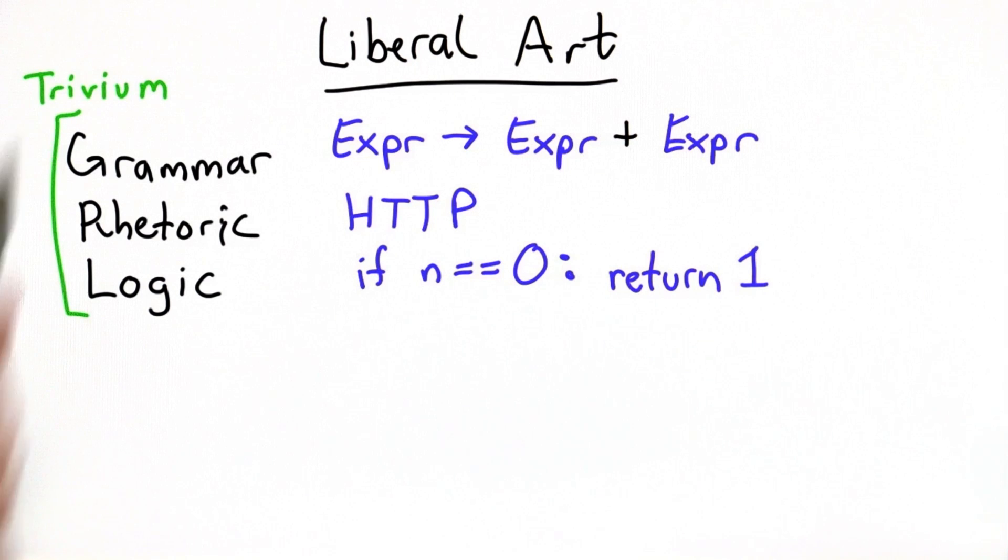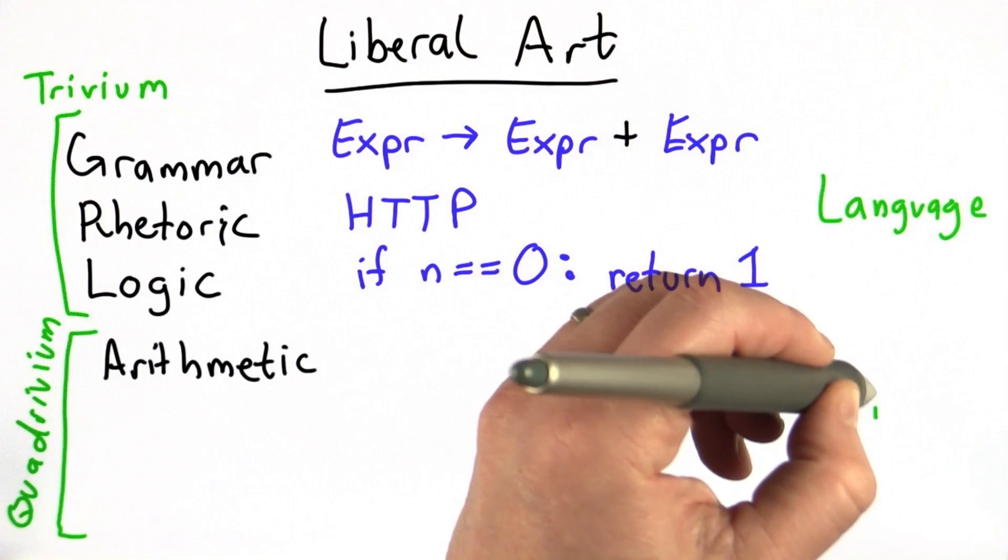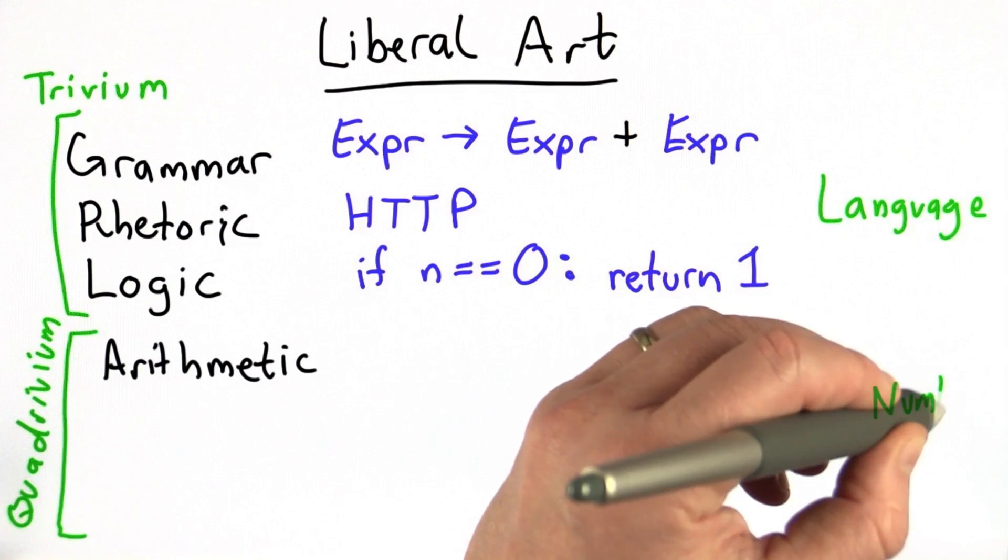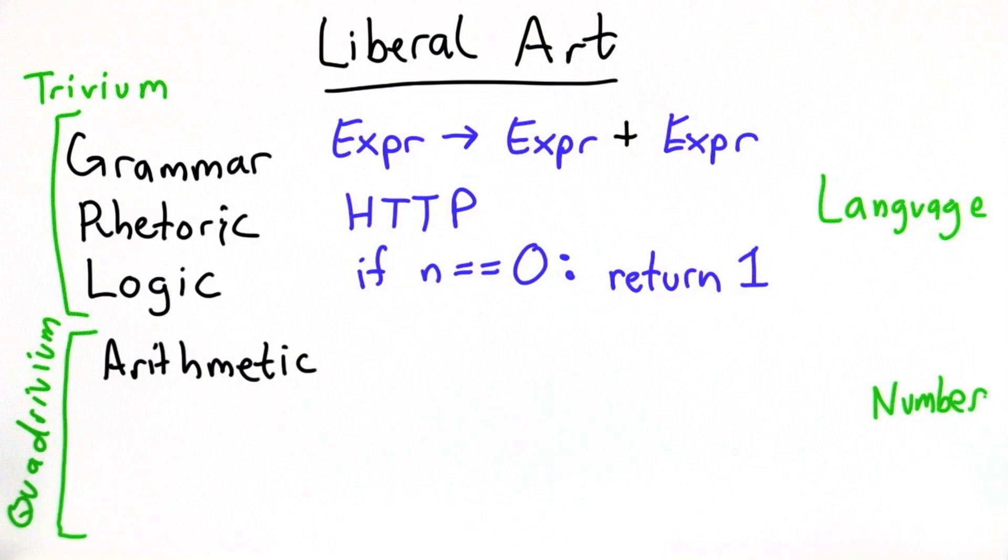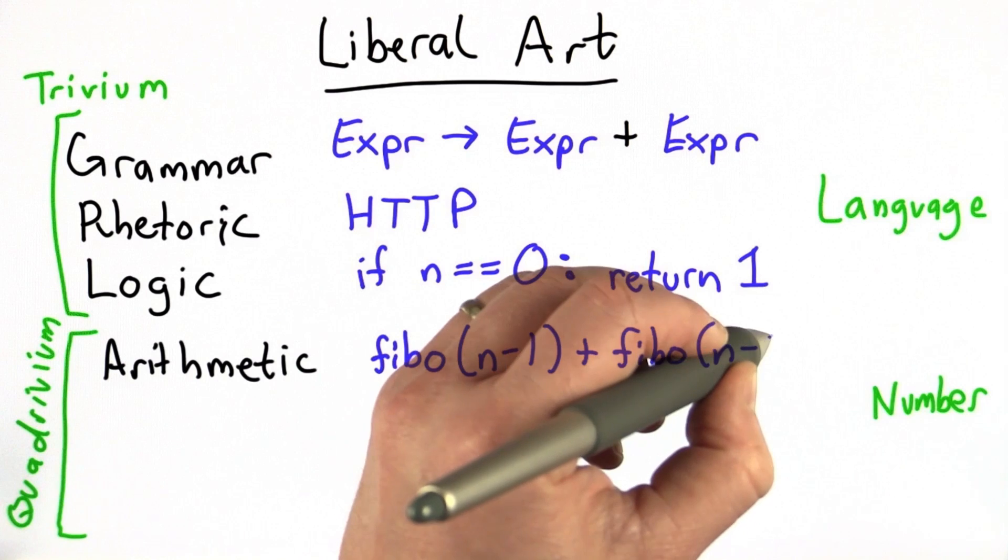So those are the three traditional liberal arts, known as the trivium, focused on language. And then we have the quadrivium, which are the four focused on numbers. Arithmetic, we've certainly seen lots of arithmetic in this class, and we can do lots of arithmetic in Python.